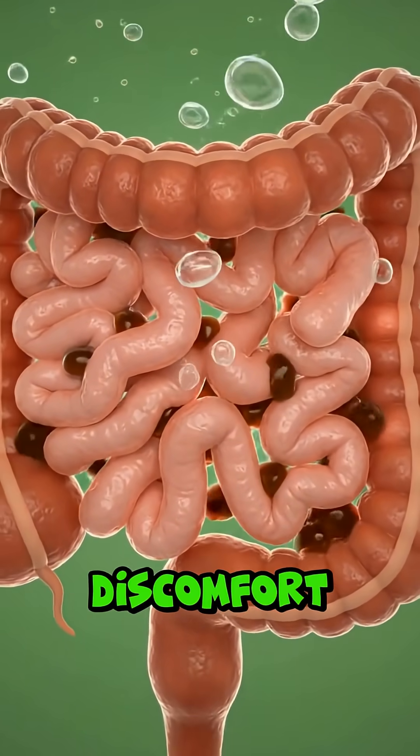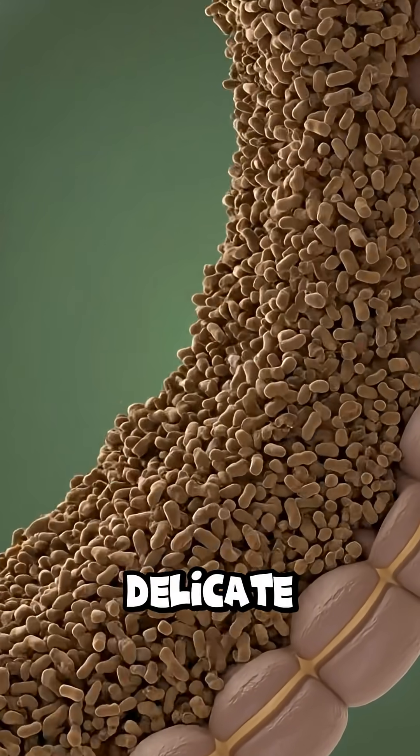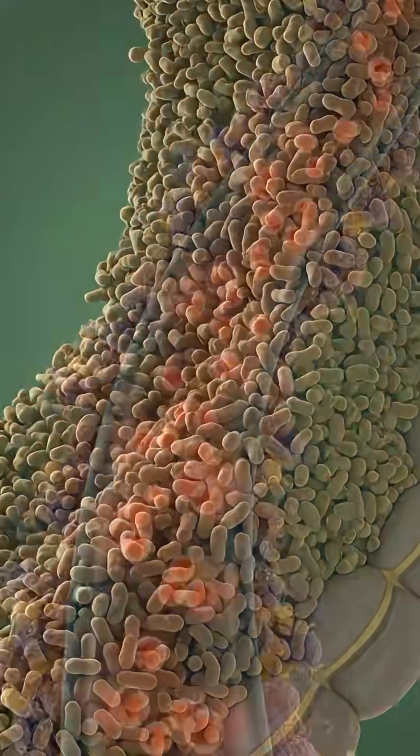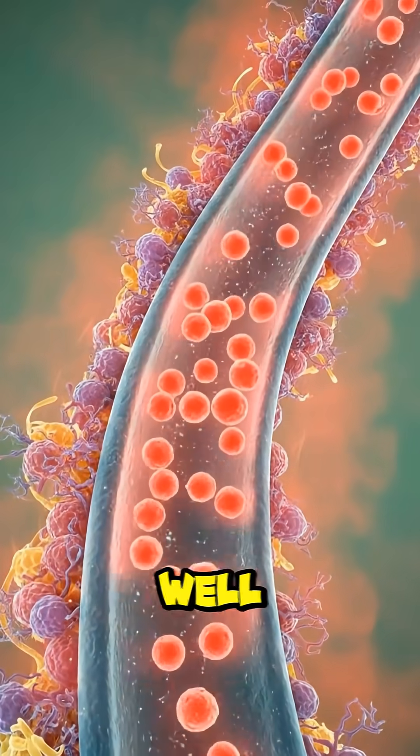A diet high in processed fats and low in fiber can disrupt the delicate balance of the gut microbiome. Certain components can trigger an increase in systemic inflammation markers, impacting overall cellular well-being.